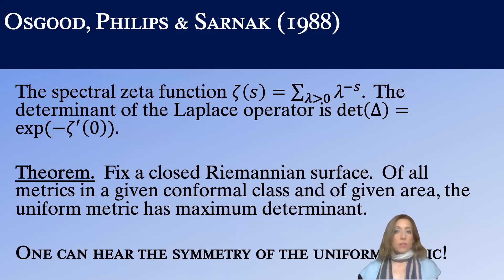The spectral zeta function has been used by Osgood Phillips and Sarnak to prove that if you're listening to Riemannian metrics in a conformal class on surface, then you can hear the uniform metric, you can hear its symmetry.